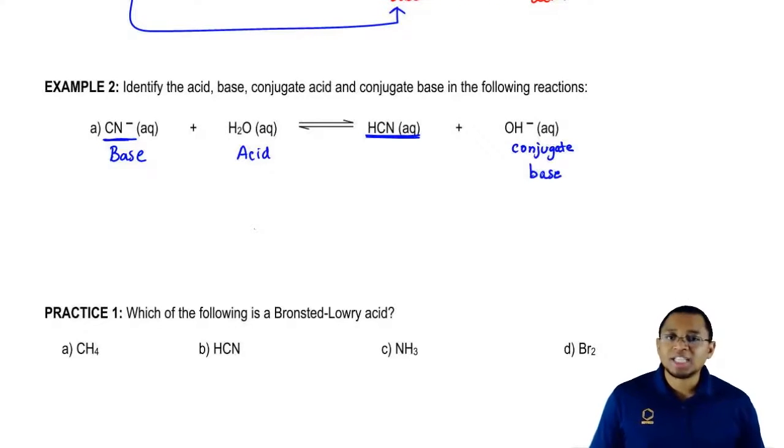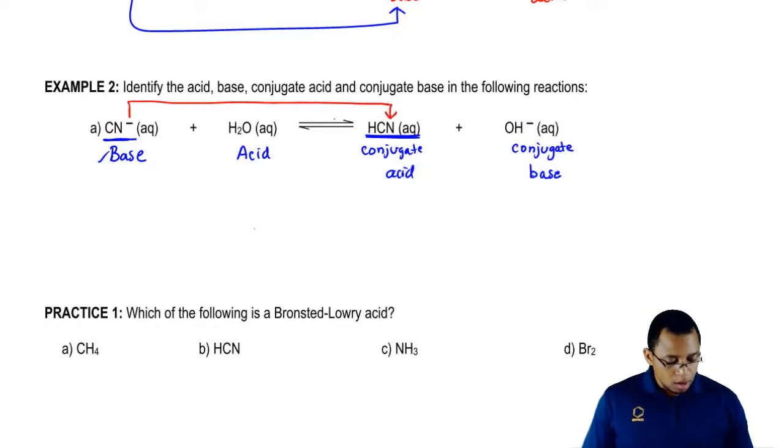Whatever you are, your conjugate is the opposite. So if this is a base, this is a conjugate acid. And then based on that, we'd say that these two are conjugates of one another and then these two also.